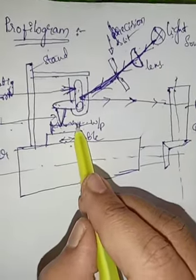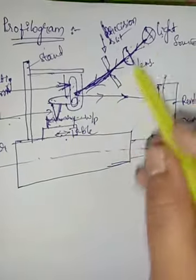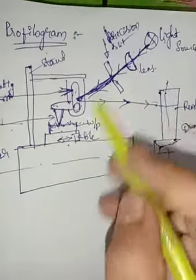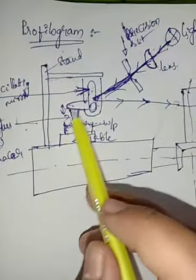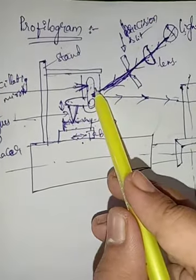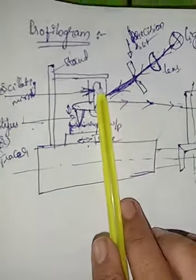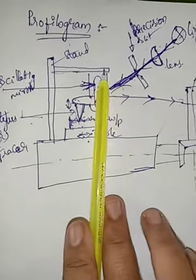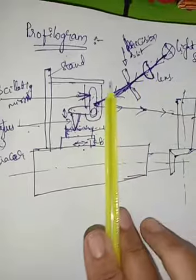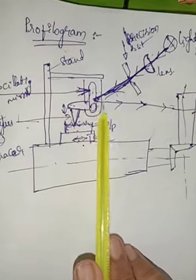However, if there is roughness in the surface, the tracer moves up and down. This movement is connected to the oscillating mirror, which changes position. The oscillating mirror reflects the light differently, creating variations on the recording film.